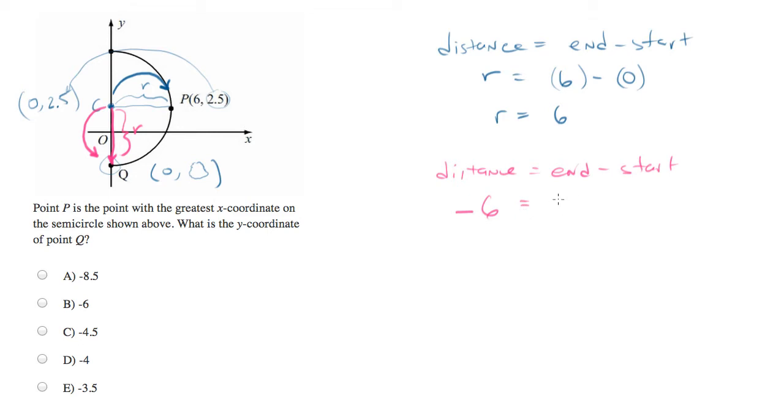The end is what we don't know. I'll put a variable such as x in here for now. The start is the y-coordinate of point C, which is 2.5. And we can solve this by adding 2.5 to both sides. And what we end up with is negative 3.5 equals x.